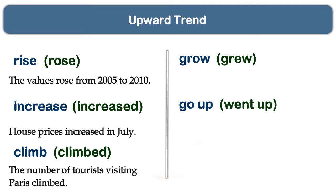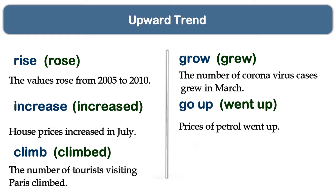Now let's build sentences using these verbs. The values rose from 2005 to 2010. House prices increased in July. The number of tourists visiting Paris climbed. The number of coronavirus cases grew in March. Prices of petrol went up. When there is an increase, you can use any one of these verbs.